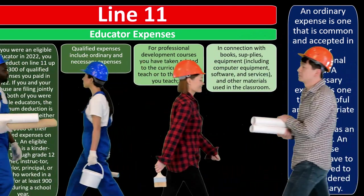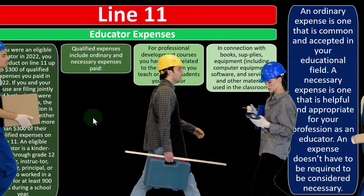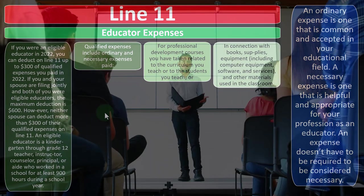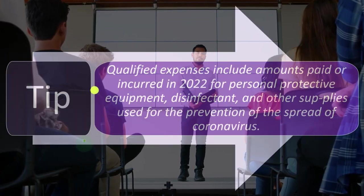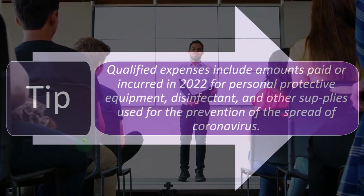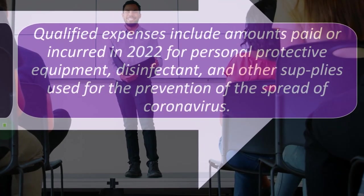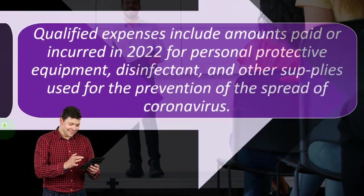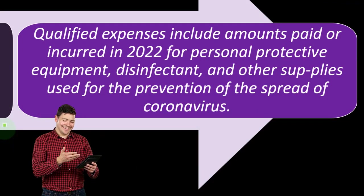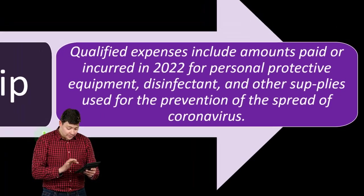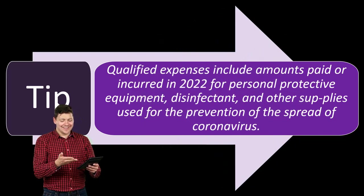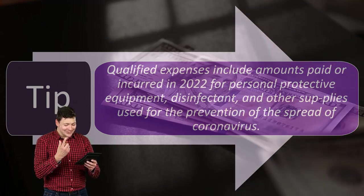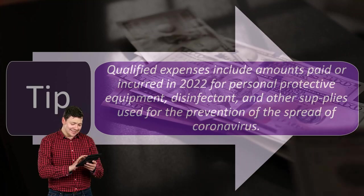An ordinary expense is one that is common and accepted in your educational field. A necessary expense is one that is helpful and appropriate for your profession as an educator — an expense doesn't have to be required to be considered necessary. As a tip, qualified expenses include amounts paid or incurred in 2022 for personal protective equipment, disinfectant, and other supplies used for prevention of the spread of coronavirus. It was interesting that during COVID they expanded the definition of qualified expenses to include sanitary supplies — as if teachers needed that to reach the $300.